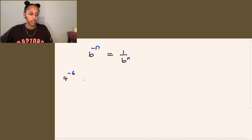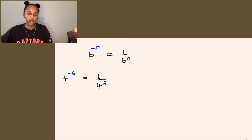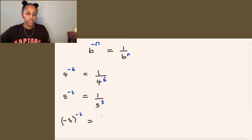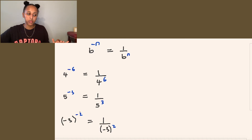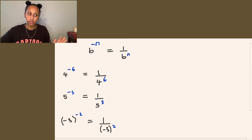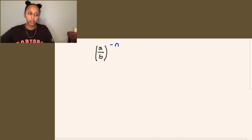Let's take a look at a couple of examples. We have 4 to the power of negative 6, which is the same as writing 1 over 4 to the power of 6 — now changed to positive. We also have 5 to the power of negative 3, which is the same as 1 over 5 to the power of 3. Now here we have negative 3 as the base to the power of 2 — all we do is 1 over negative 3 to the power of 2, because the base remains the same. We're only changing the exponents to positive, not the base itself.